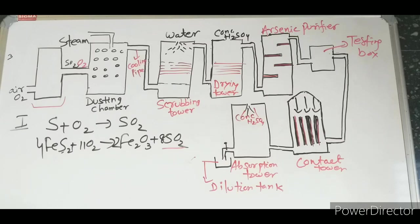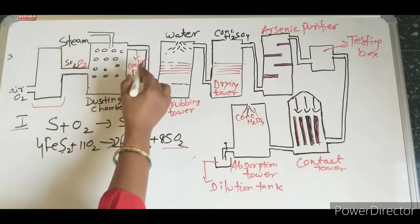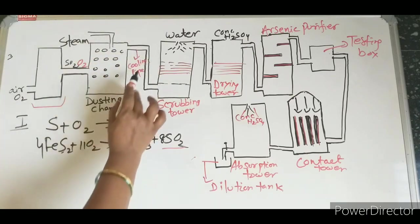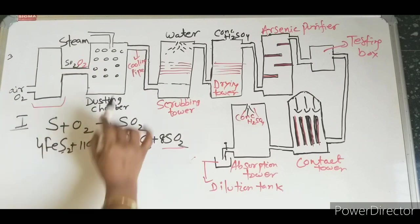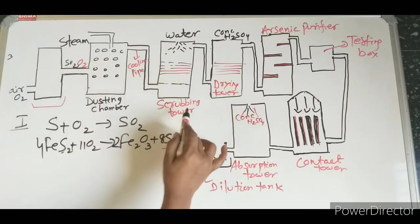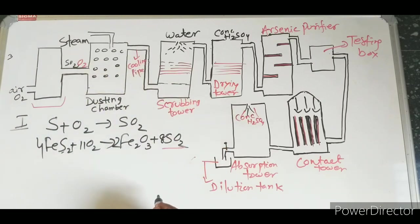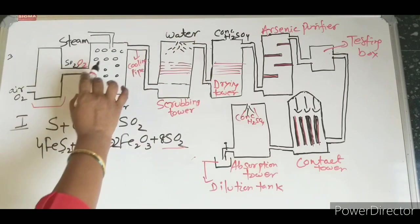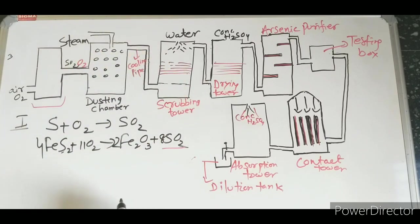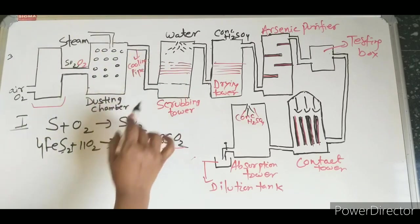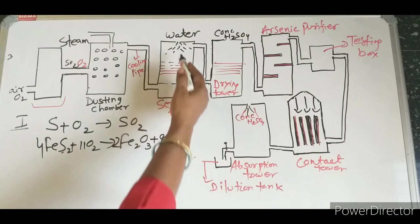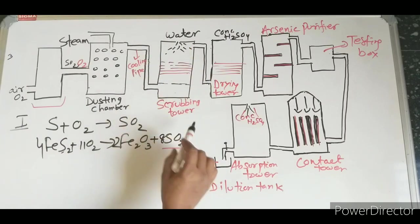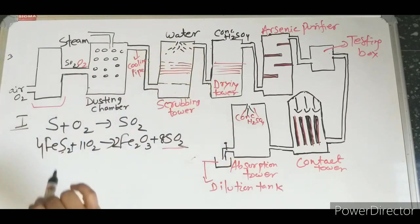After the cooling pipes, the gas goes to the scrubbing tower. In the scrubbing tower, water is sprinkled — unlike steam in the dusting chamber — and any remaining dust particles are absorbed and settled. The gases then move to the drying tower.